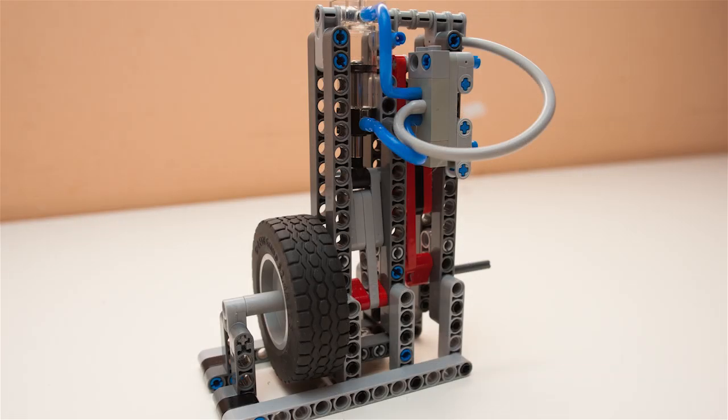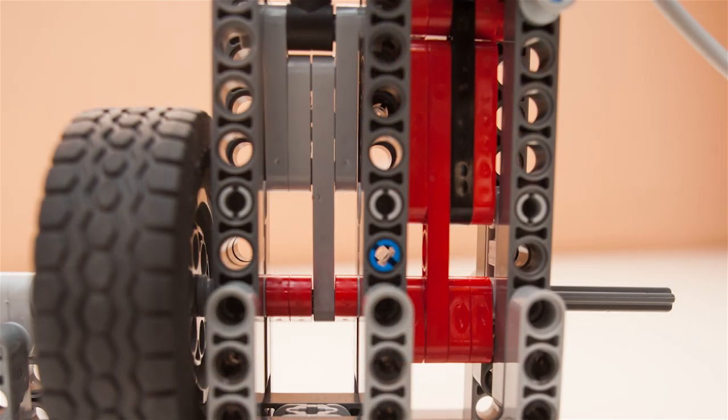So what we have here is a single cylinder that is connected to the crankshaft via a 7-stud long conrod and a valve that is offset at 90 degrees and is connected to the crank via an 8-stud conrod.